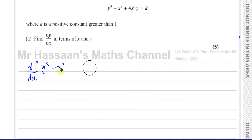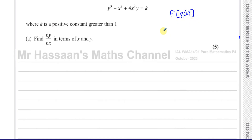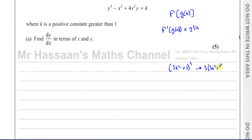Differentiating y³ with respect to x: when you differentiate a composite function — a function inside another function — you differentiate the outer function and multiply by the derivative of what's inside. For example, (3x² + 2)³ differentiates to 3(3x² + 2)² × 6x = 18x(3x² + 2)². So: multiply by the power, reduce the power by one, then multiply by the derivative of the inner function.